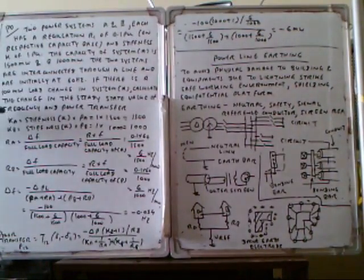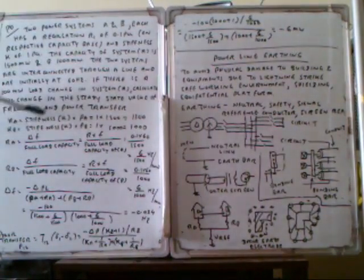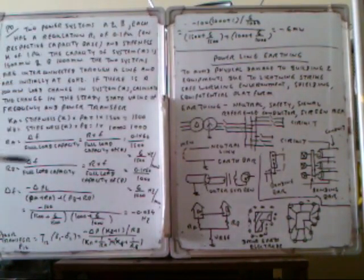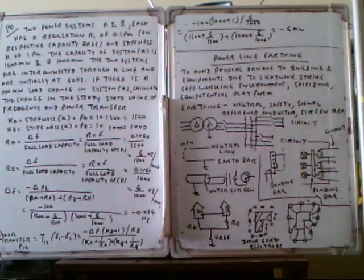First, we have to calculate K_A. K is the stiffness K multiplied by P_A. So the stiffness is already given here, 1% per unit, and the power P_A is 1500 MW, so you get 15 MW.